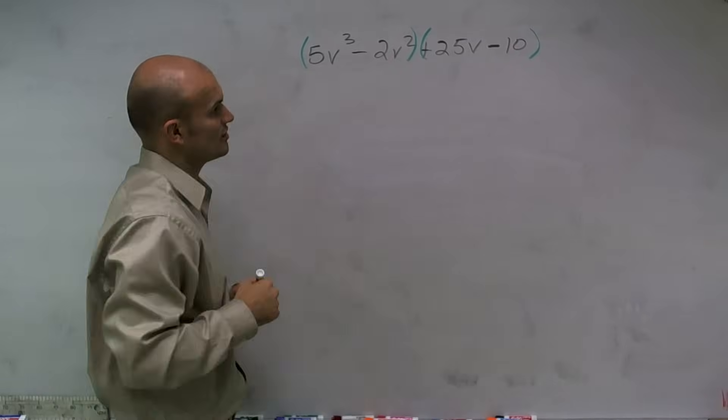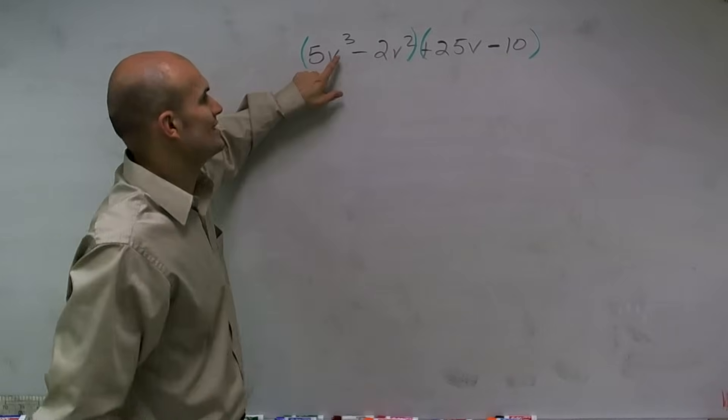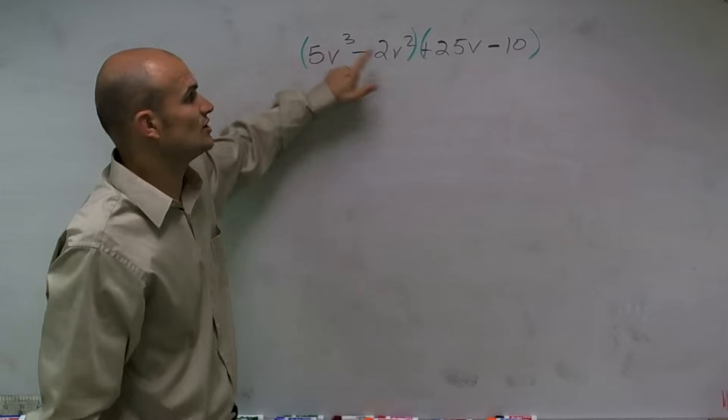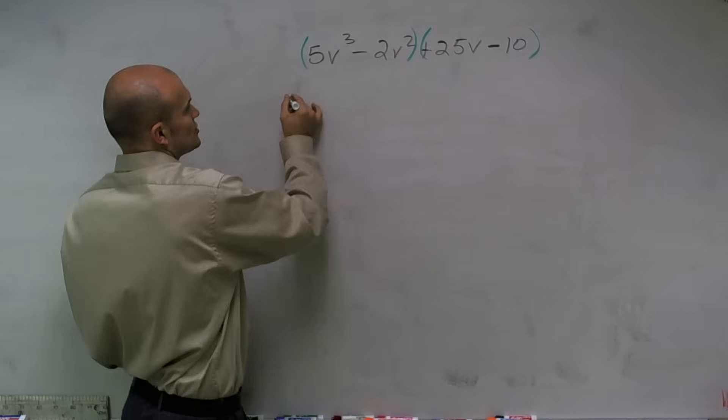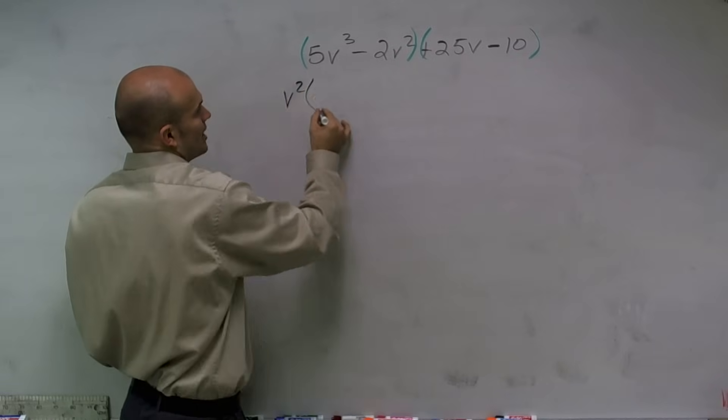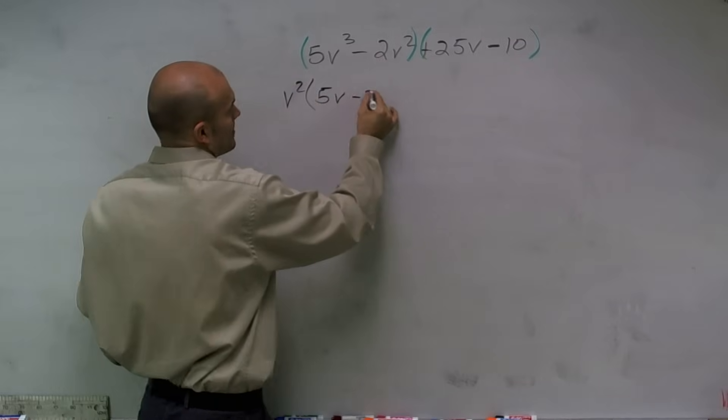So if I look at my first two terms, I need to say, well, what do these two terms share in common? Well, they share a v squared. This one has a v cubed, here's a v squared. So the greatest common factor of my two terms is a v squared. So I'll factor that out and I'll be left with 5v minus 2.